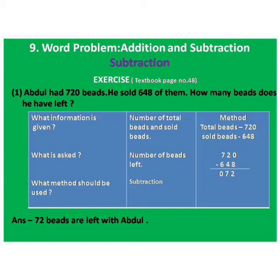Yaa gadi tasartha kai ho to? Abdul kade 720 beads ahet. Tya pahi ki tya nai 648 viklilayat. Sold manje viklilayat ahet. Prashna kai vichar laya? How many beads does he have left? Ata ta cha kade kiti beads shillak rahe lelaya ahet.